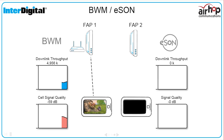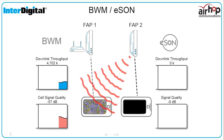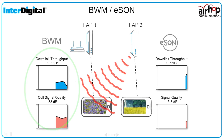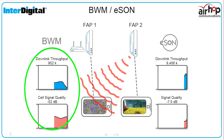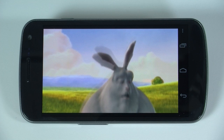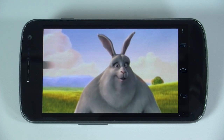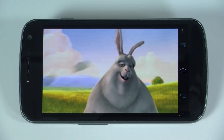FAP2 is introduced, causing intercell interference at UE1. Throughput and signal quality are diminished, causing the video at UE1 to freeze.